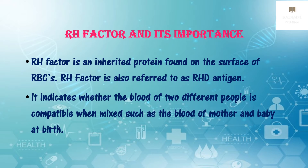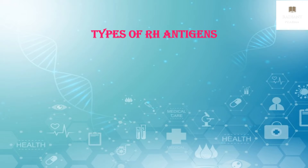For example, compatibility is important in situations such as the blood of a mother and baby at birth. If the mother is RH negative and the fetus is RH positive, the mother's immune system identifies the fetal cells as foreign and produces antibodies against the fetal cells, which destroys red blood cells of the fetus and may pose serious problems during birth.